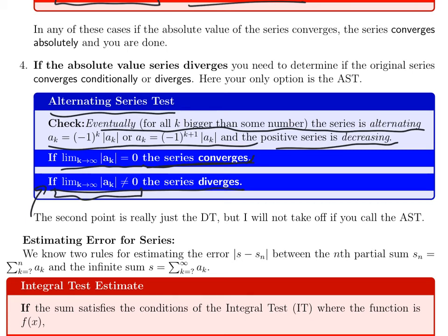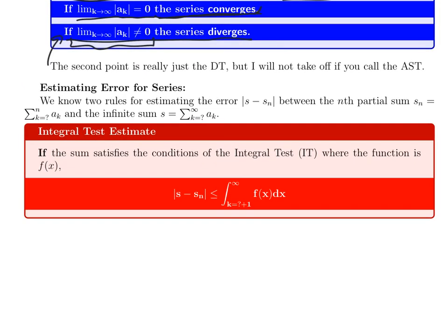Last thing I want to remind you of very briefly is, in addition to learning when a series converged, we also learned how fast. That is, we learned how to estimate the error. Remember, the error is the absolute value of s minus s_n, where s is the infinite sum that you want to estimate, and s_n is a finite sum that you hope is close to it. So you want this error, s minus s_n, to be as small as possible.